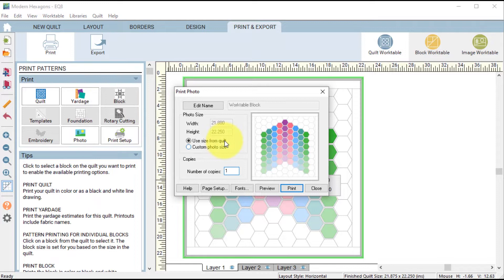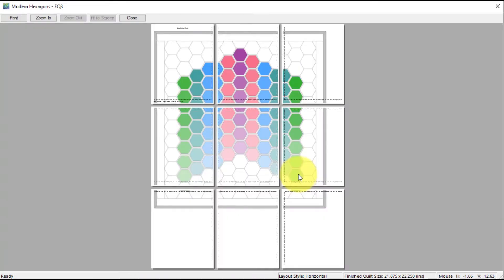Now, under Photo Size, we want to use the size from the quilt. If you need to adjust any settings or select a different printer, you can go to Page Setup. Otherwise, go ahead and just do a preview. Go ahead and print out the backdrop.